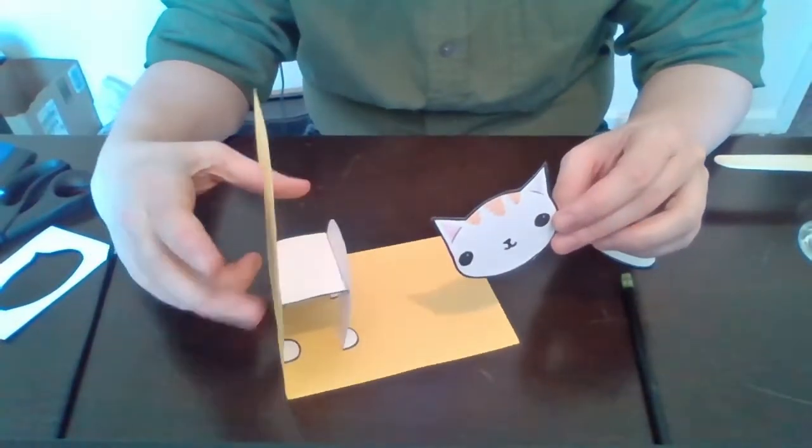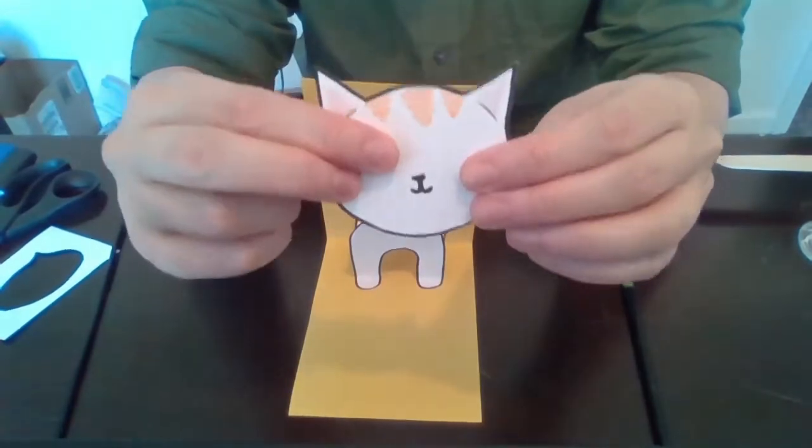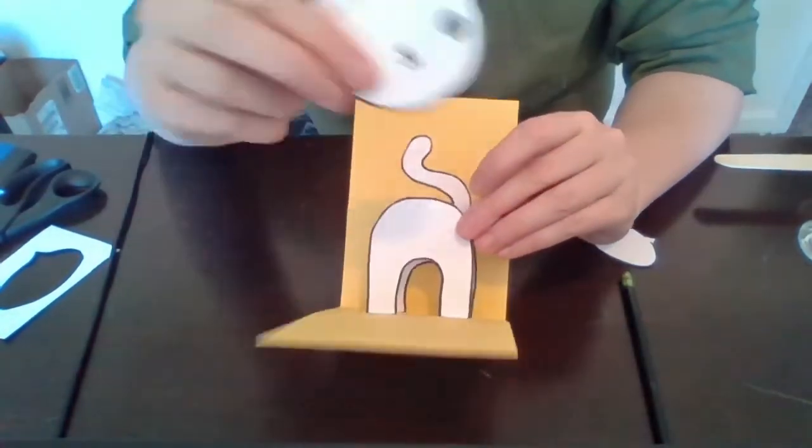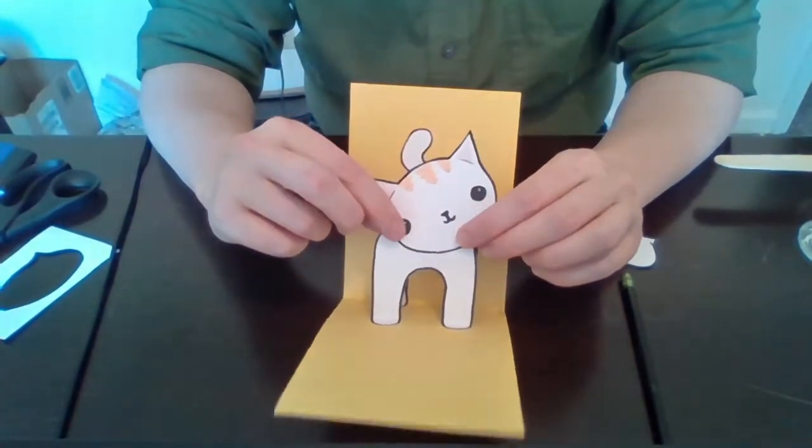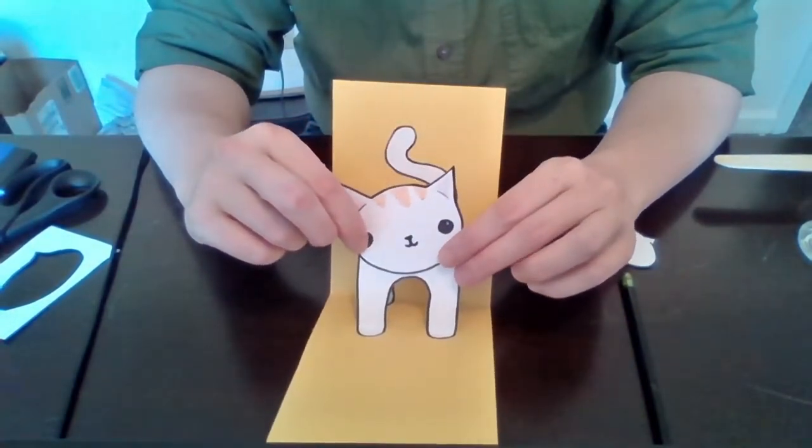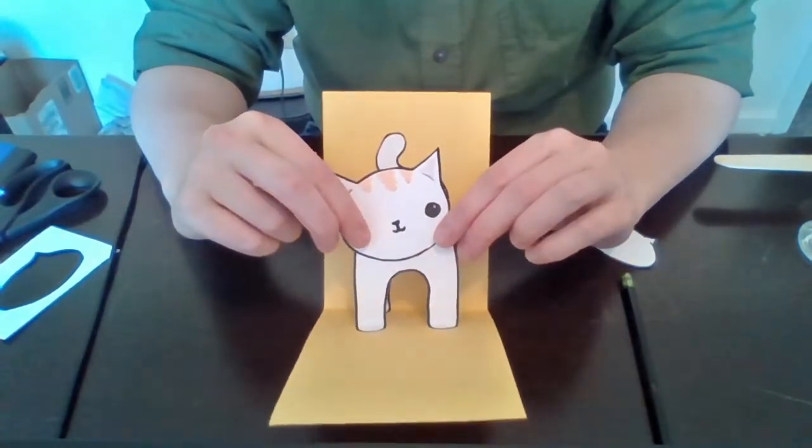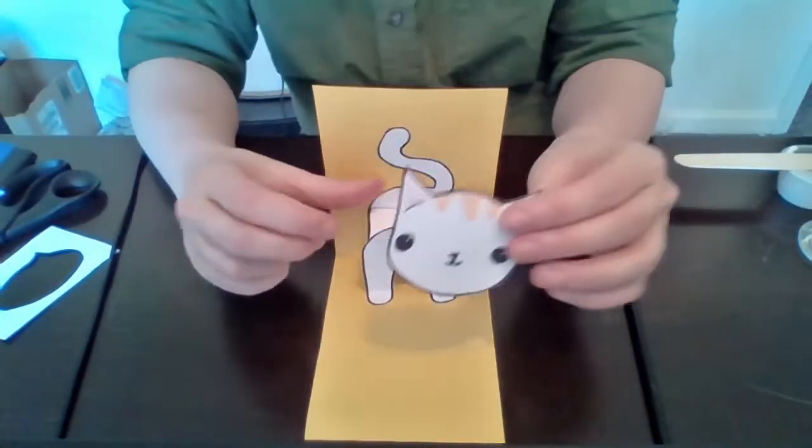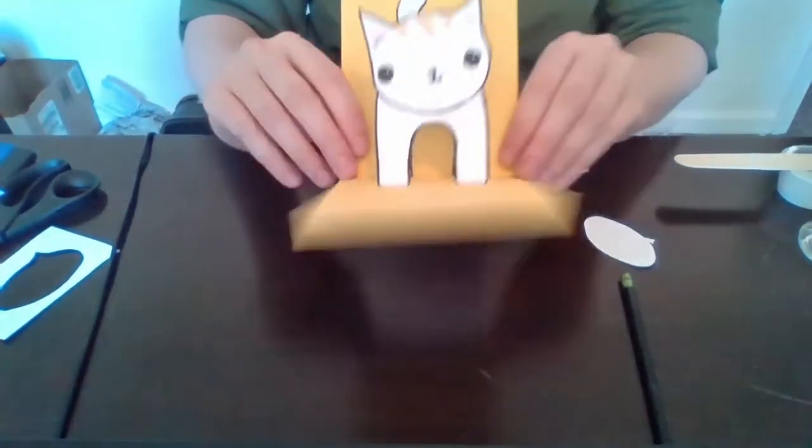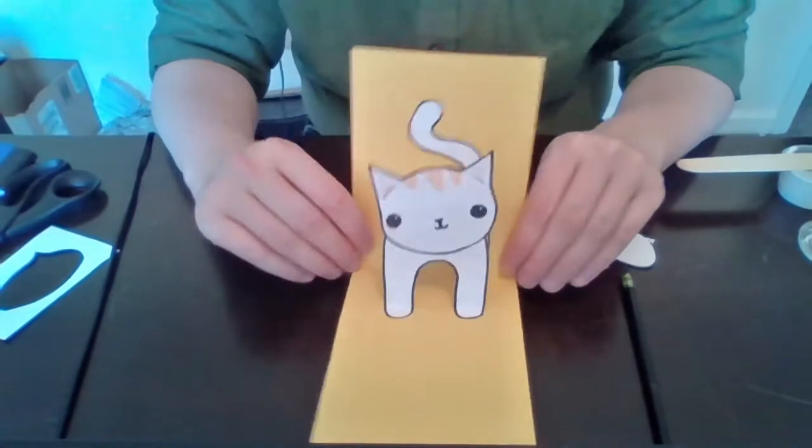So at this point, we're going to connect our head to our body. And so we're going to glue it just on the front and you can angle it a little bit to make it look a little more inquisitive, a little more cute that way. Glue it right here.